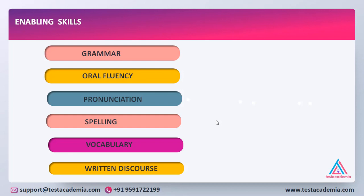Through your speaking module you will be tested on oral fluency and pronunciation. Through question types like fill in the blanks in the reading module, you will be tested on grammatical accuracy and vocabulary. Spellings and written discourse are tested through essay writing and summarize written text question types. Written discourse is about the connectivity between words and points in a passage — it indicates coherence and cohesion, ensuring the examiner gets the right message as intended.